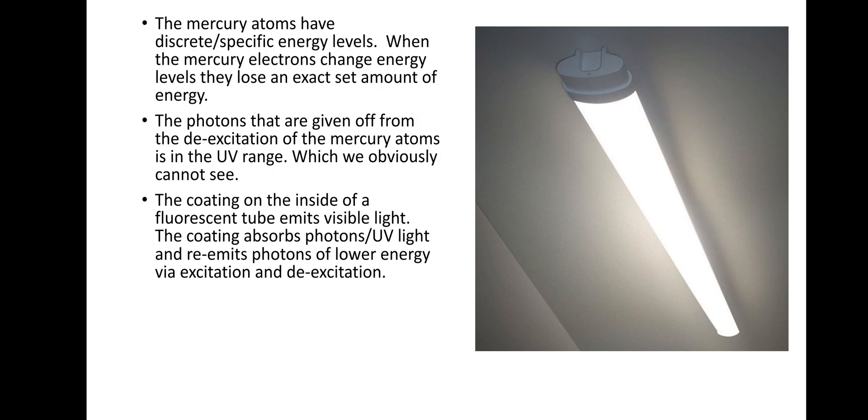The coating that's on the inside of the fluorescent tube then emits a visible light. So what happens is the coating absorbs the UV light, the photons, and then it re-emits photons of low energy via excitation and de-excitation.